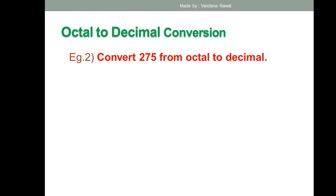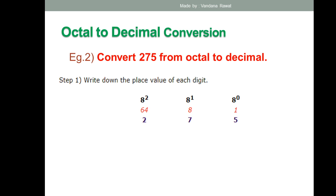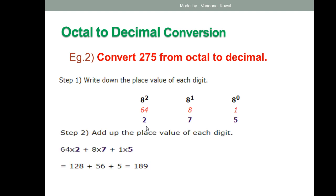Next example: convert octal 275 into decimal. The place values are: 8⁰ = 1, 8¹ = 8, 8² = 64. Multiply each digit starting from the right: 5 × 1 = 5, 7 × 8 = 56, 2 × 64 = 128. Adding all: 128 + 56 + 5 = 189. So the decimal equivalent of octal 275 is 189.